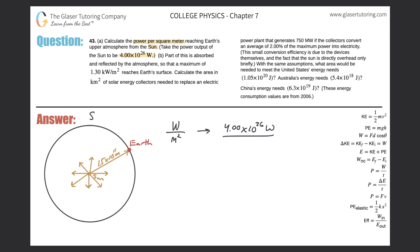The surface area of a sphere equals 4π times the radius squared. Here, the radius in this problem is the distance between the Earth and the Sun. If this is in meters and I plug that unit in for the radius, that would be meters squared, giving the value for the denominator. So this equals 4π times 1.5 times 10 to the 11 meters, and that's squared.